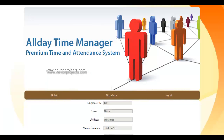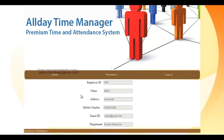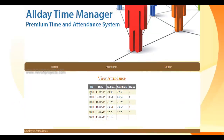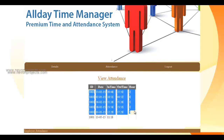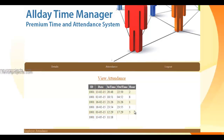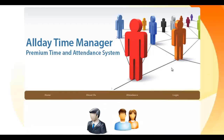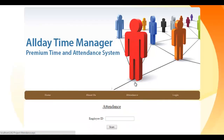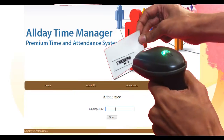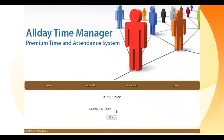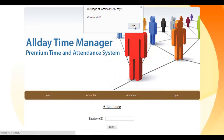This shows the employee's details, including an option to view attendance. The previous attendance history shows when the card was swiped and the employee entered the premises. Today's information shows empty fields because the card has not yet been swiped on exit. Let's log out and scan some more employees.